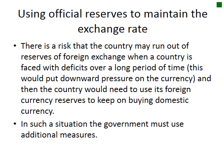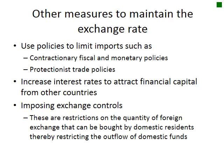In such a situation the government must use additional measures. They could limit imports through contractionary fiscal and monetary policy — so people buy less overall and fewer imports — as well as protectionist trade policies. By limiting imports, they're limiting citizens from taking their currency to the foreign exchange market and exchanging it for other currencies, which would increase the supply of domestic currency and make it worth less.